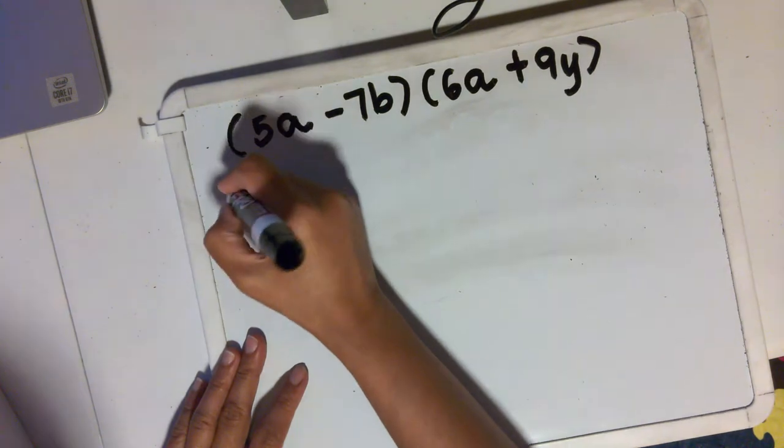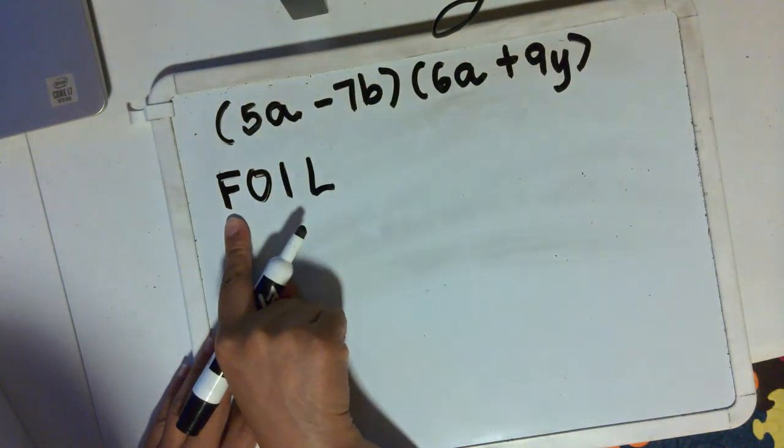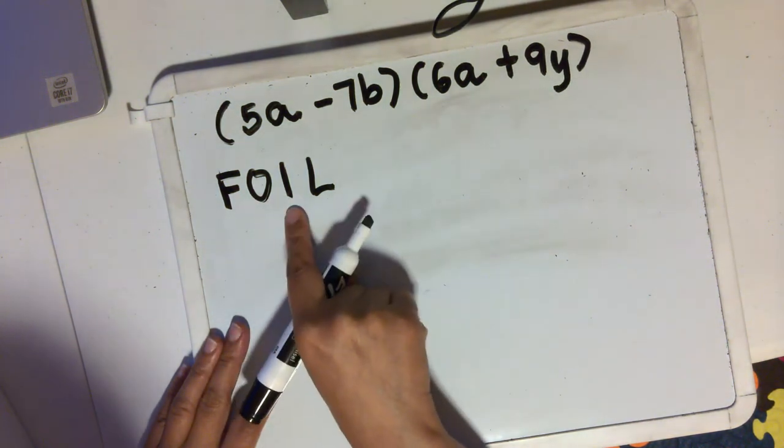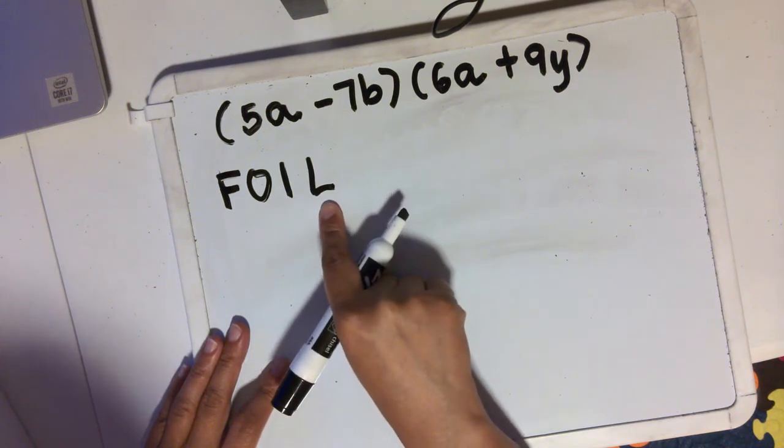So FOIL method, what does that mean? That means first term multiplied by the first term, outer term multiplied by the outer term, inner term multiplied by the inner term, and last term multiplied by the last term.